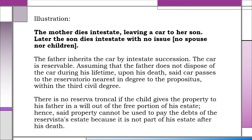Illustration: The mother dies intestate, leaving a car to her son. Later, the son dies intestate with no issue — meaning no spouse or children. The father inherits the car by intestate succession. The car is reservable. Assuming the father does not dispose of the car during his lifetime, upon his death, said car passes to the reservatorio nearest in degree to the propositus within the third civil degree. There is no reserva troncal if the child gives the property to his father in a will out of the free portion of his estate. Hence, said property cannot be used to pay the debts of the reservista's estate because it is not part of his estate after his death.